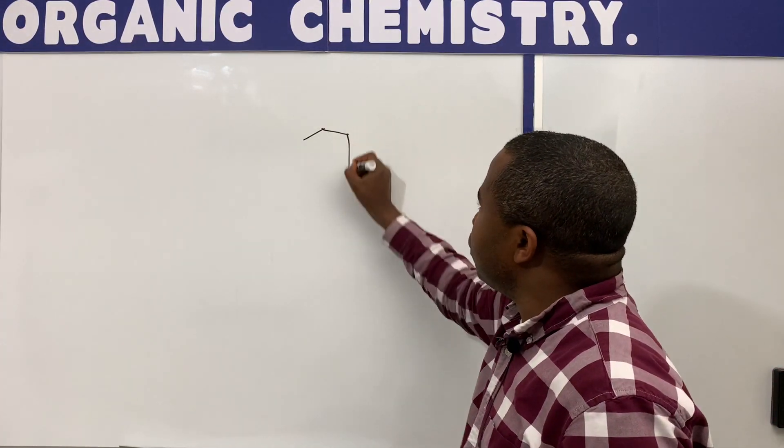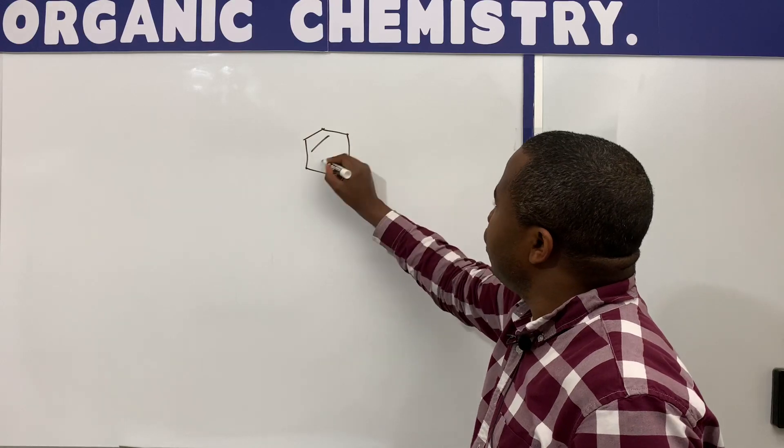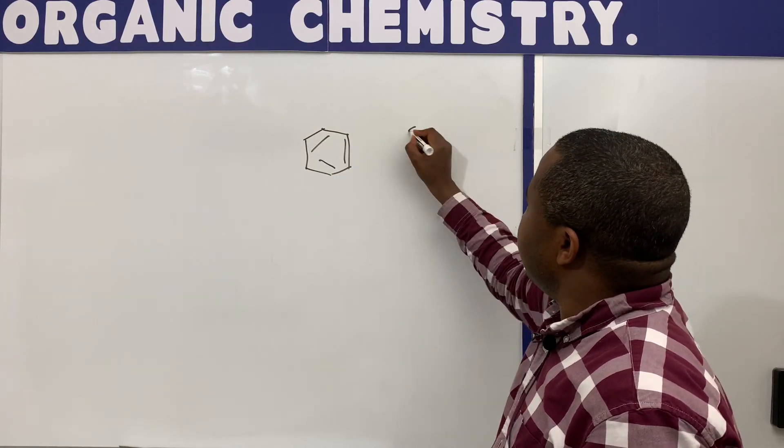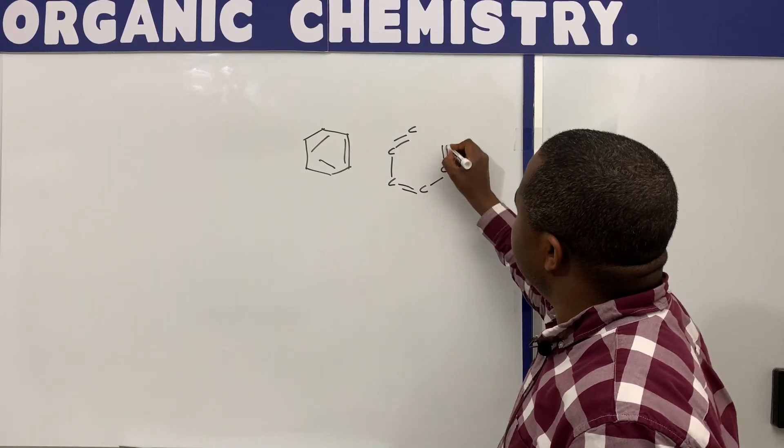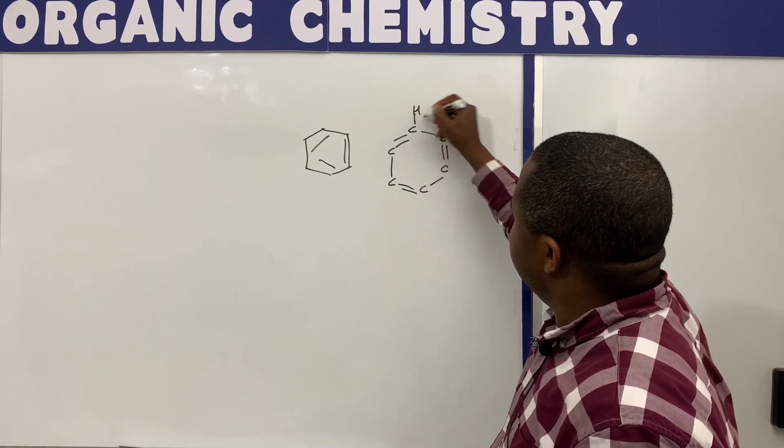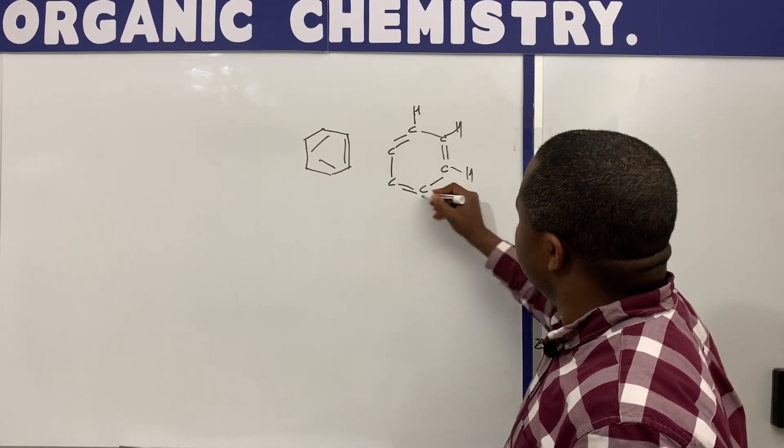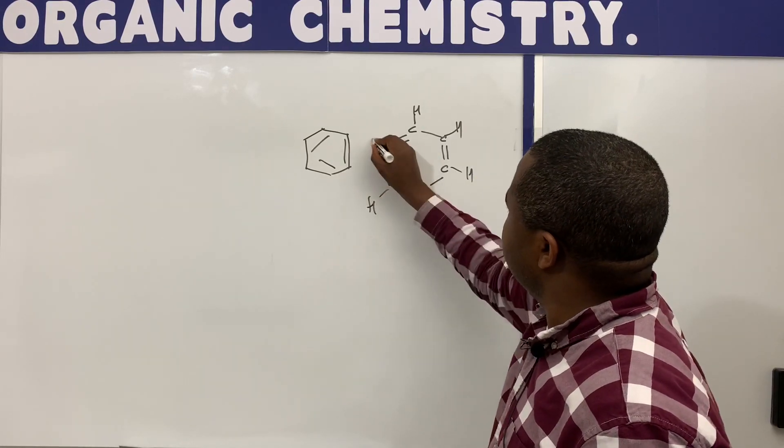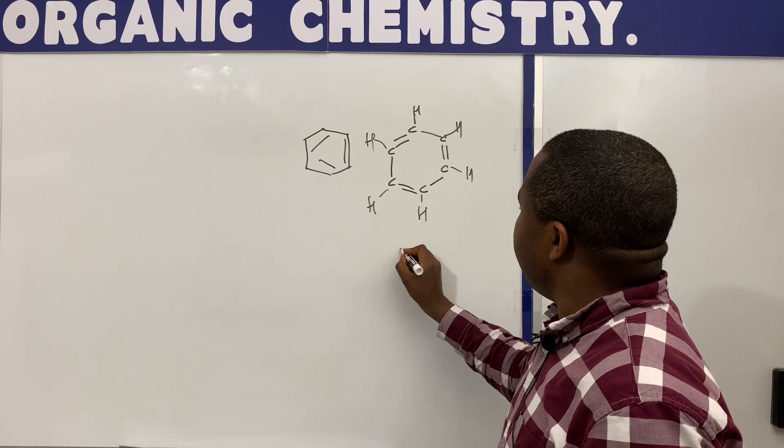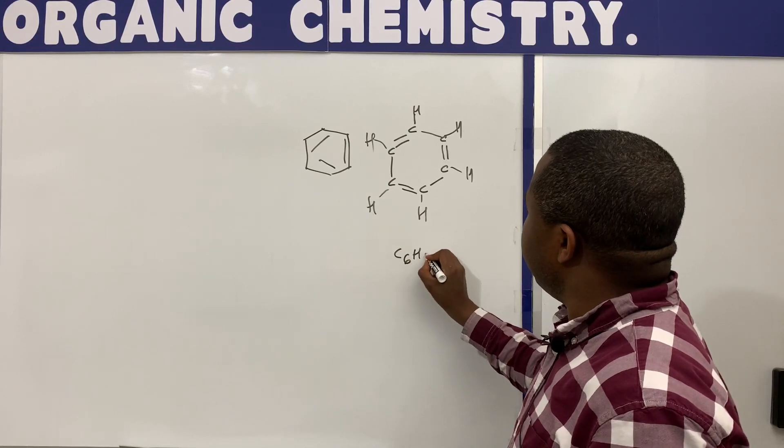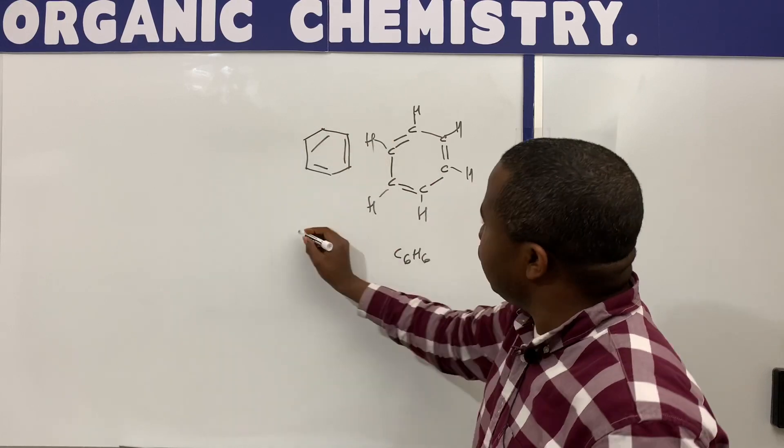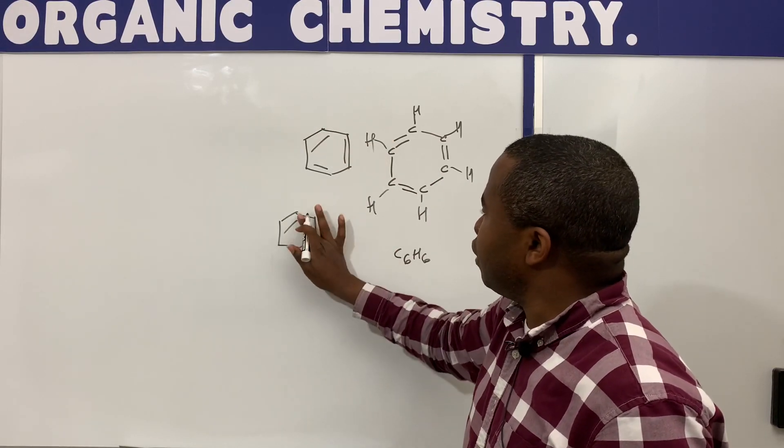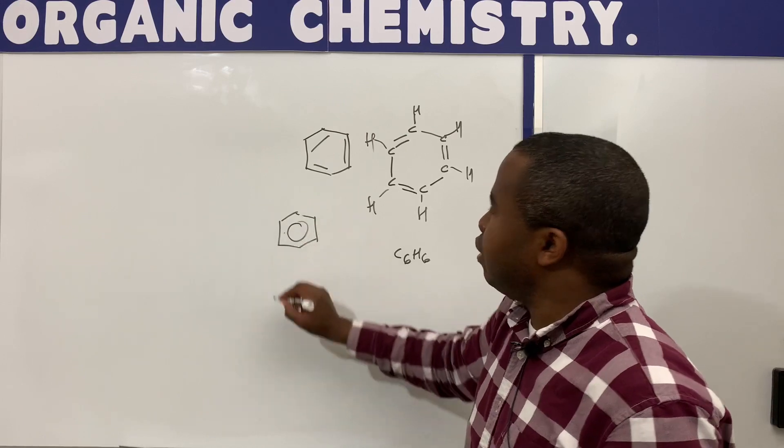So in organic chemistry, when we talk about benzene, we're talking about this structure right here, and it can also be written out this way, with molecular formula C6H6. Oftentimes you see benzene written this way, or sometimes you see benzene written with this ring inside, and that is because these pi electrons are moving around.